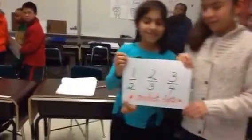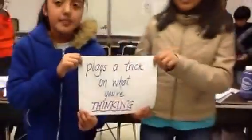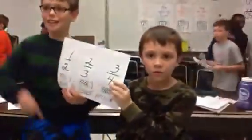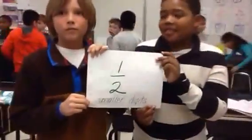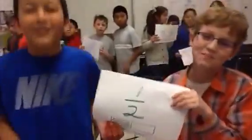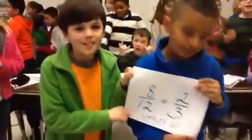Get a fraction to be simple, a fraction with the smallest digits, plays a trick on what you're thinking, cause it cuts the biggest pieces. Smaller digits are, larger pieces are, so make digits small, can simplify all.